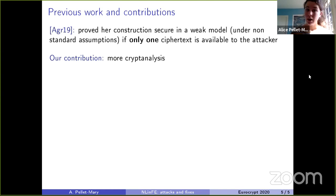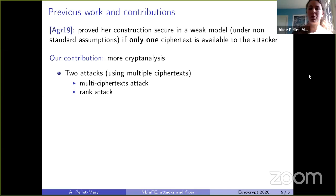However, the restriction to one ciphertext is not very natural because when bootstrapping noisy linear FE to IO we need the attacker to have access to more than one ciphertext. We studied the construction in this setting and found two attacks that both use multiple ciphertexts, which is not a contradiction with what was proved. The first attack, the multi-ciphertext attack, requires only two ciphertexts. The second, the rank attack, requires many more ciphertexts.